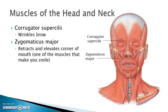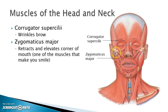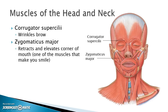Then we have the zygomaticus major. We actually have two muscles here: the zygomaticus major and zygomaticus minor. Major is a little larger, but we don't need to know the minor. When this contracts toward the zygomatic bone, or cheekbone, it pulls up the corners of the mouth, so it helps make you smile.